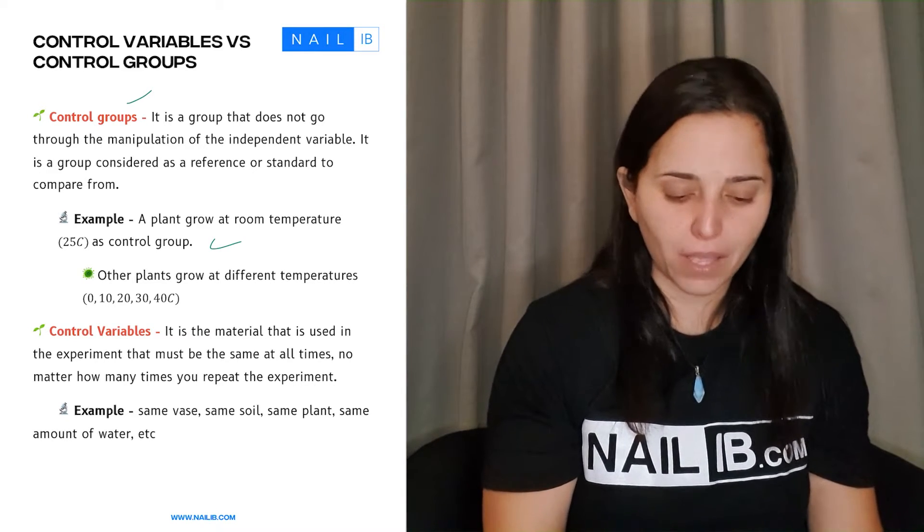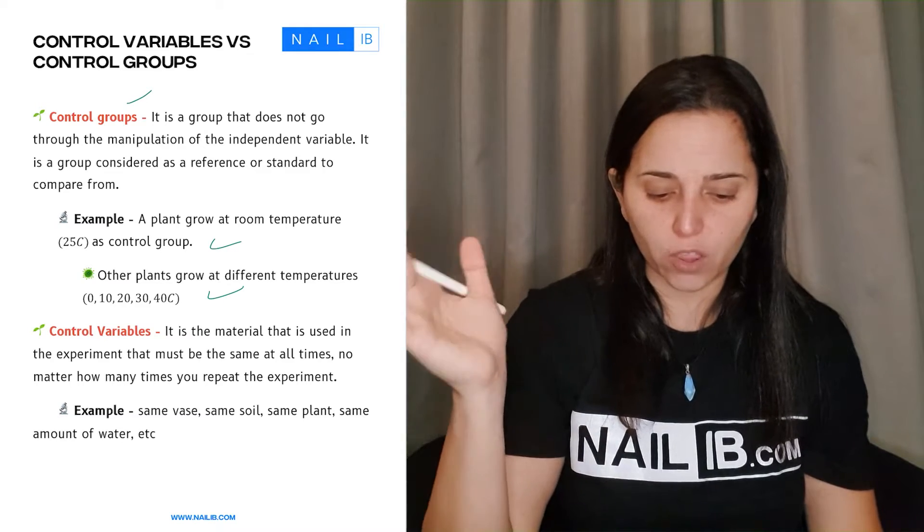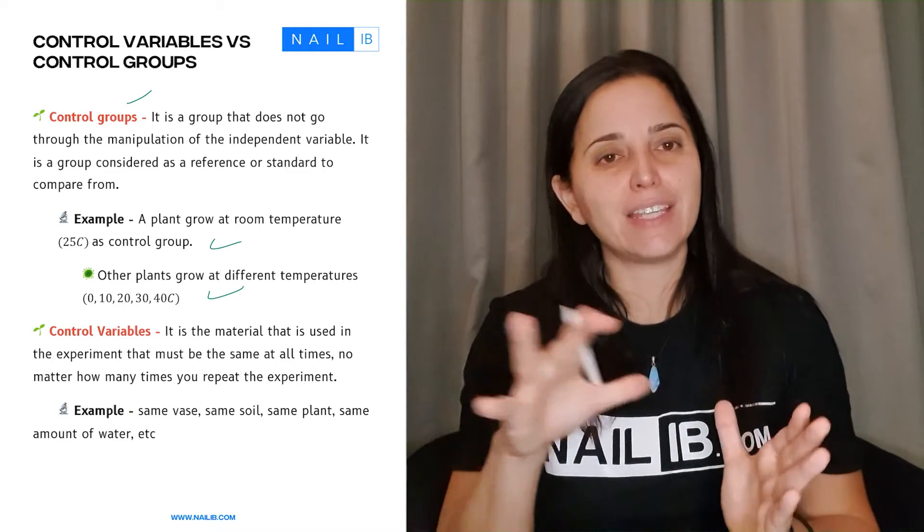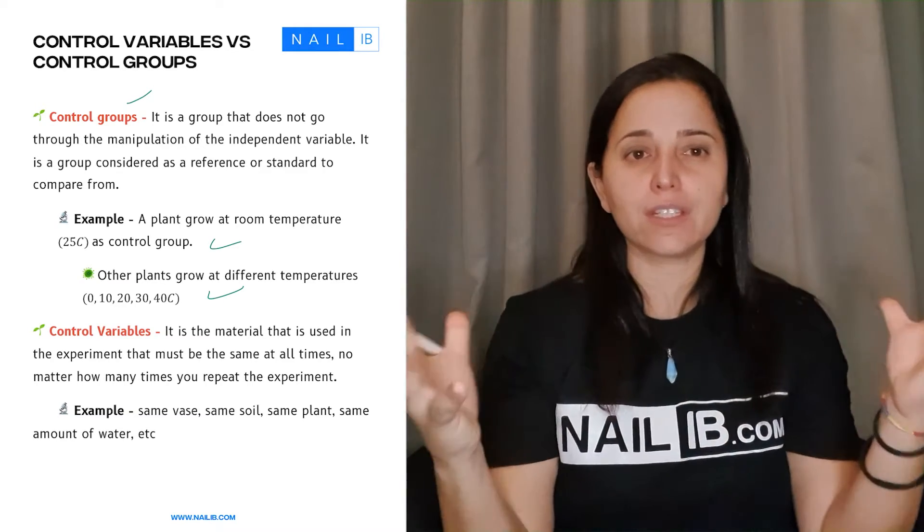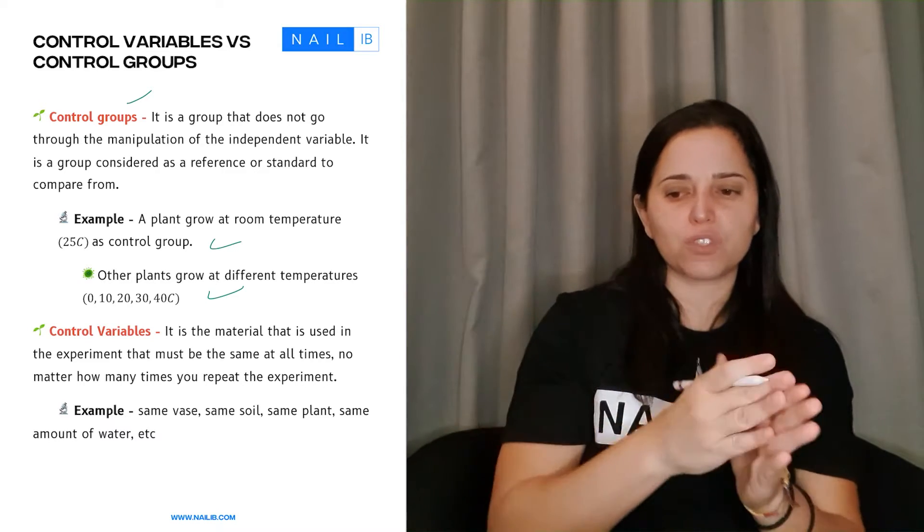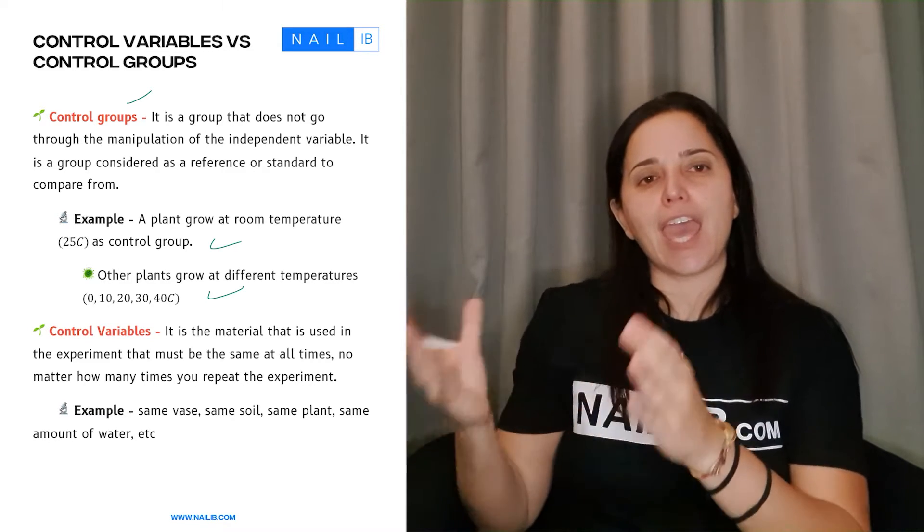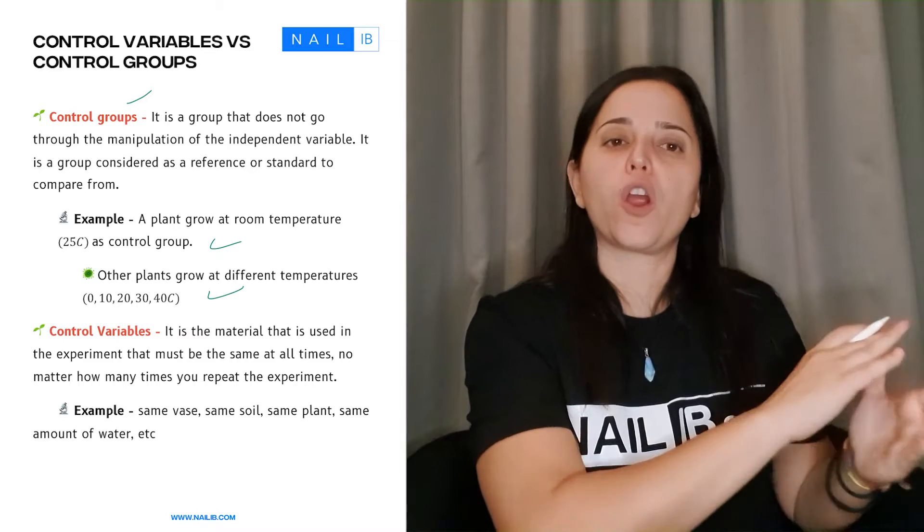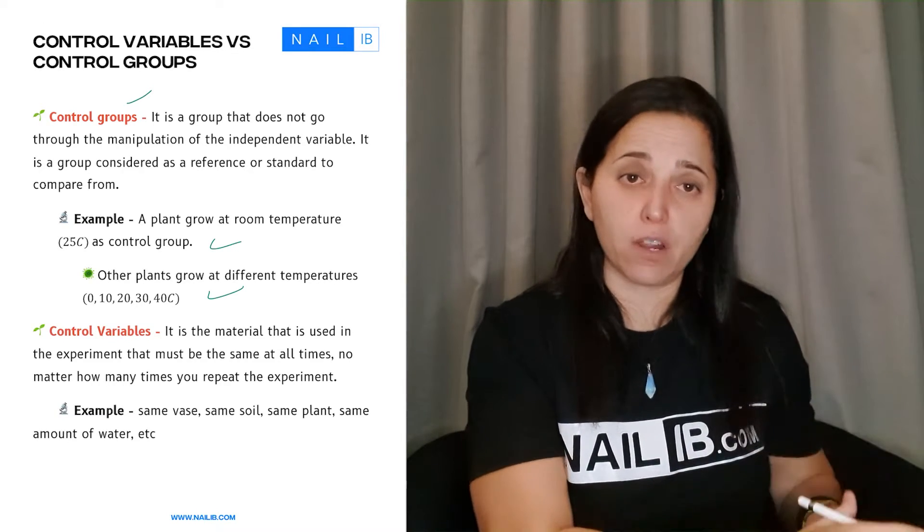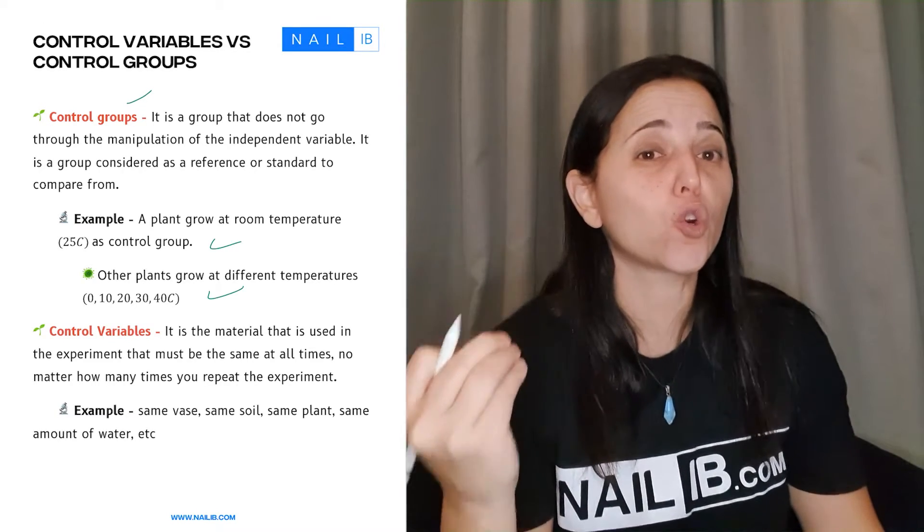And then the rest of the same plants are going to be at 0, 10, 20, 30, 40. That's the manipulation of the independent. You see the difference? So you can use from 0 to 40 and look at their data and compare to the control group where all the plants stay at 25 at all times. That's what a control group is.